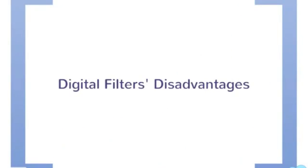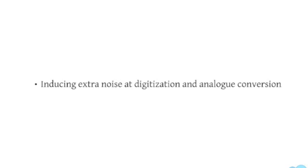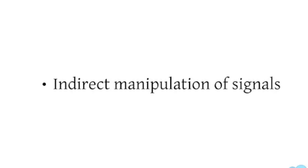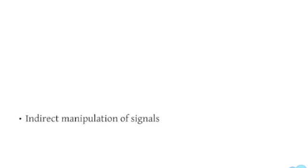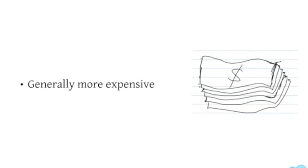However, there are some disadvantages in using digital filters. They sample in a discrete time mode and loss of information is apparent. Extra noise is induced while converting the signal back and forth. And digital filters manipulate the input signals indirectly. They induce the so-called latency effect, which means unwanted phase shift of the signal. Also, they are generally considered to be much more expensive than analog filters.